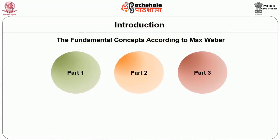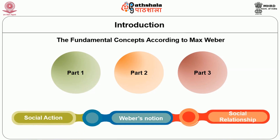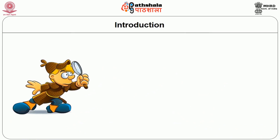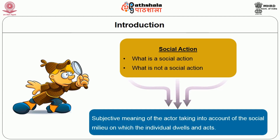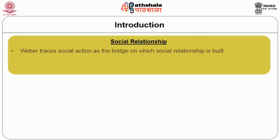It should be remarked at the very onset of this module that there are three parts to this module, this being the first. This intellectual venture will follow the chronological order as mentioned. Firstly, we discuss Weber's notion of social action, followed thereafter with his concept of social relationships. The focus centers upon exposing his views on these notions, and we attempt to distinguish what Weber considers as social action and what is not, emphasizing the aspect of subjective meaning of the actor taking into account the social milieu in which the individual dwells and acts. When it comes to the notion of social relationship, we argue that Weber traces social action as a bridge on which social relationship is built.